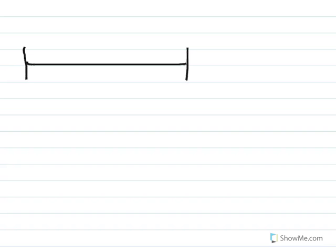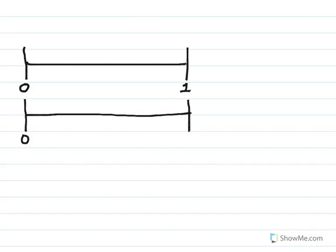Here's my first number line. I label my zero. I label my one. My next number line should be the same size. I label my zero. I label my one. My top number line I'm going to divide into sixths. My second number line I'm going to divide into fourths. For both of them, I'm going to label the second piece — that makes this one two-sixths, and that makes this one two-fourths.